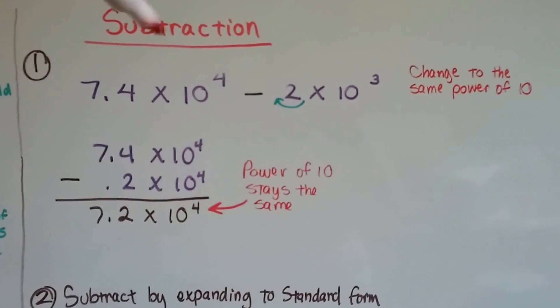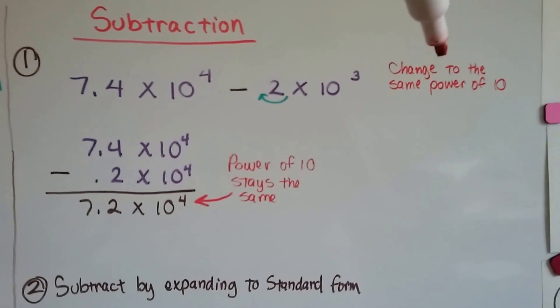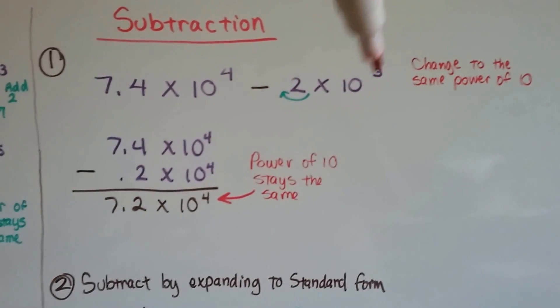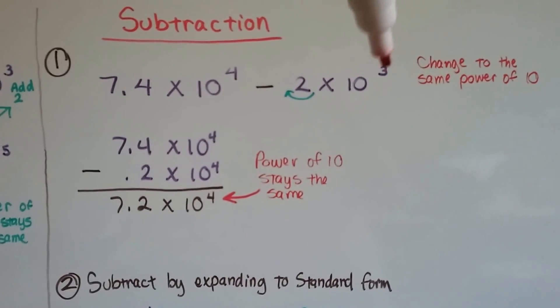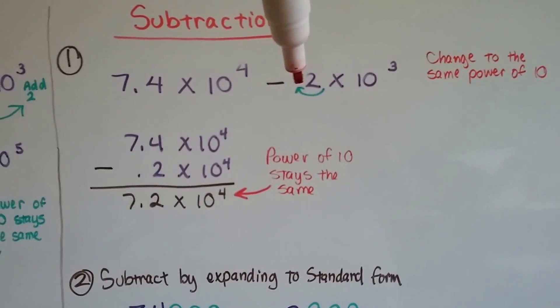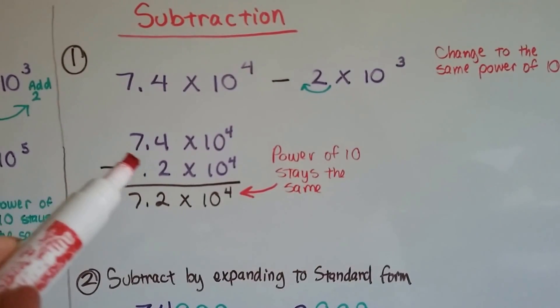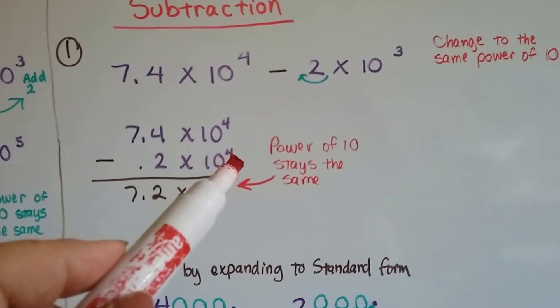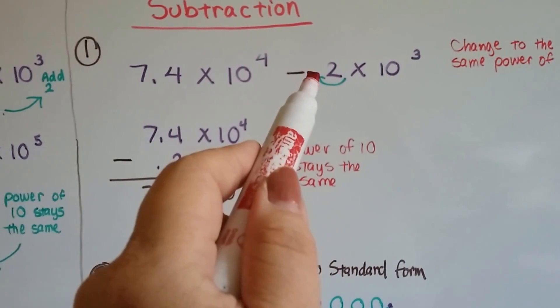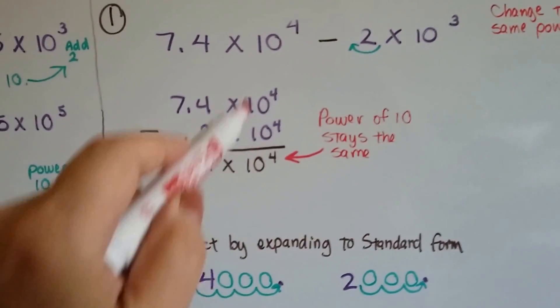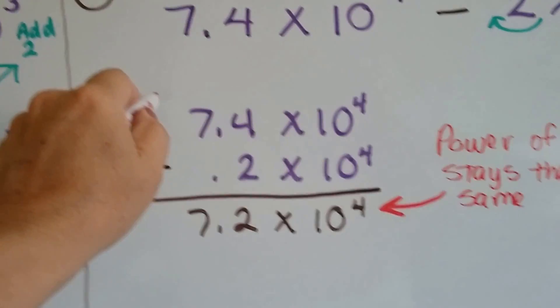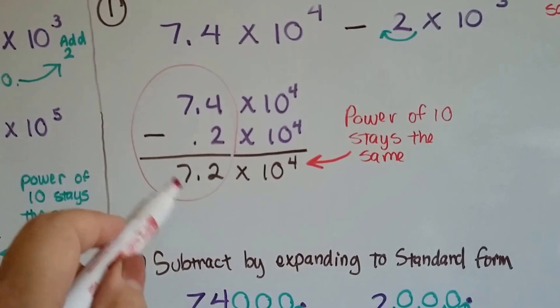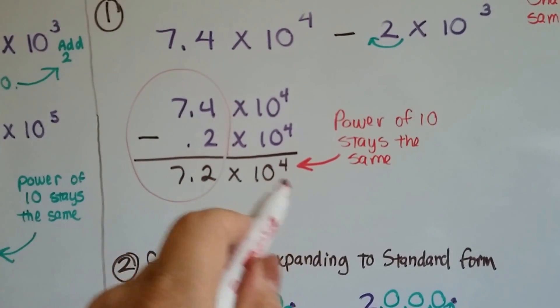So here's subtraction. Just like addition, we need to change it to the same power of 10. We've got 7.4 times 10 to the 4th power, and we're trying to take away 2 times 10 to the 3rd power. So I'm going to change this to the 4th power by moving the decimal from behind the 2 to in front of the 2. So now I've got 7.4 times 10 to the 4th power, and I'm taking away .2 times 10 to the 4th power. Now my powers are the same. I can subtract these multipliers. 7.4 minus .2 is 7.2 times 10 to the 4th power. The powers stay the same.